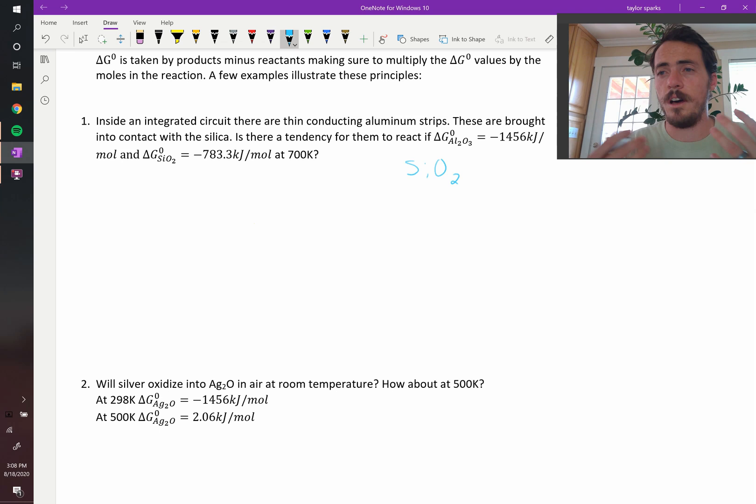Whenever you hear something with just the A on the end, it usually means the oxide. So like alumina is Al2O3. It's not aluminum, it's alumina. So it's the oxide. Okay, so the aluminum is in contact with silica.